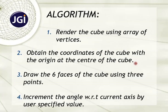We define the vertices matrix where we give the different corner points of the cube in the form of x, y, z, assuming that the center of the cube is at the origin. Then we draw the six faces of the cube by mentioning the cube corner points using gl polygon.